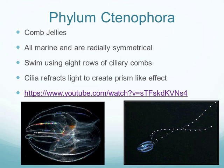Ctenophores don't have nematocysts; instead they have sticky cells called colloblasts, and eight ciliary comb plates around their body. They move by swishing these comb plates back and forth. The cilia reflect light — when hit with white light they produce a rainbow effect — though since most live in the deep ocean this is rarely seen naturally.